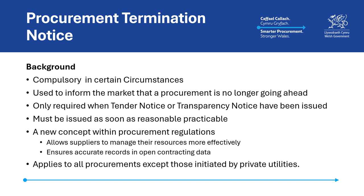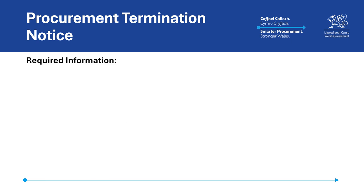This notice applies to all procurements except those initiated by private utilities. The following information must be included when publishing a procurement termination notice. Please note that authorities should refer directly to the regulations and associated guidance, as this information is only being provided as a general guide to the notice requirements.